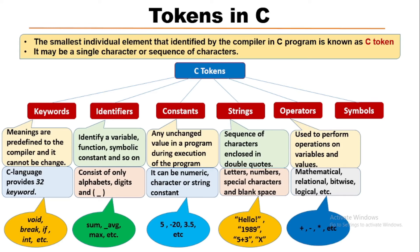Last is symbols. Special symbols have some special meaning and they cannot be used for other purposes. Examples of symbols are dollar, ampersand, parenthesis, bracket, braces, etc. So this is all about C tokens.